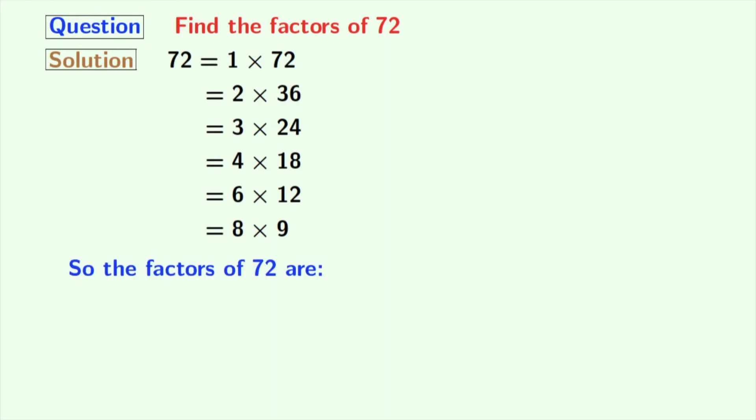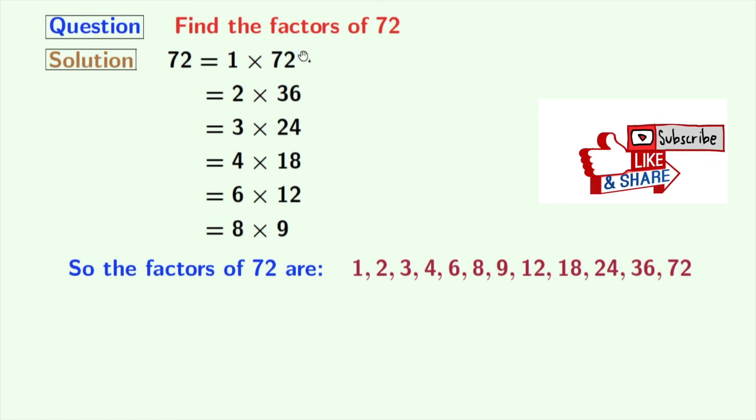Now, we have all the factors of 72 which are 1, 2, 3, 4, 6, 8, 9, 12, 18, 24, 36, and 72.